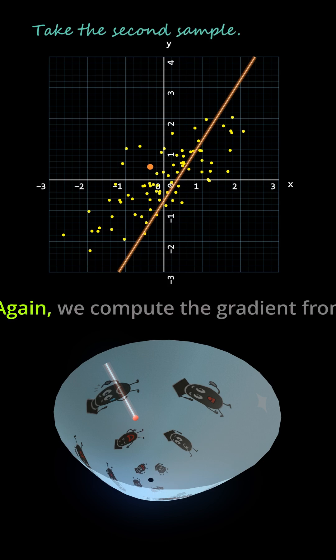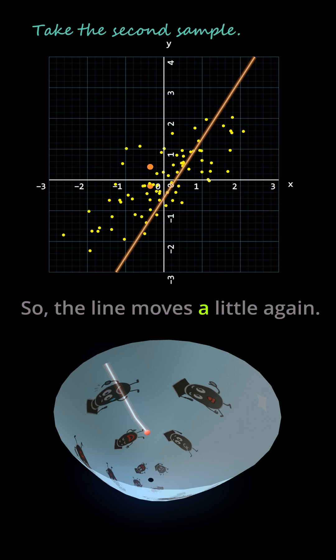Then, the second data point arrives. Again, we compute the gradient from that point, and W gets updated once more, so the line moves a little again.